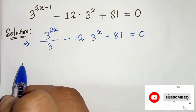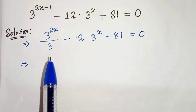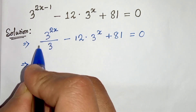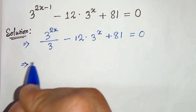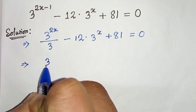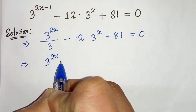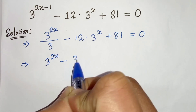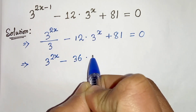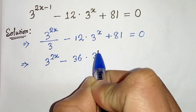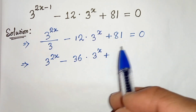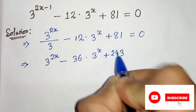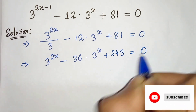In the next step, we will multiply 3 on both sides. So from this we will get 3 times 3 to the power of 2x divided by 3 — so the 3s get cancelled — and we get 3 to the power of 2x, minus 12 times 3, that is 36, times 3 to the power of x, plus 81 times 3 is 243, equals to 0.